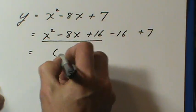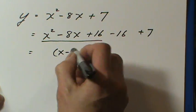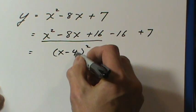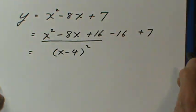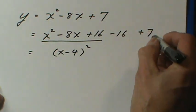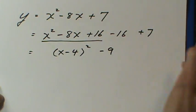That perfect square can be written like this: x minus four. The number in here is always half of the negative eight in this case. And the negative sixteen plus the seven gives us negative nine on the end.